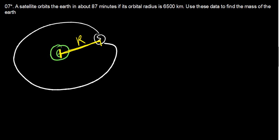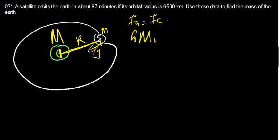For this satellite to move around the circle, there must be a force of gravity. So we set gravitational force FG equal to the centripetal force. FG equals G times capital M times small m over R squared, and centripetal force equals small m times V squared over R.